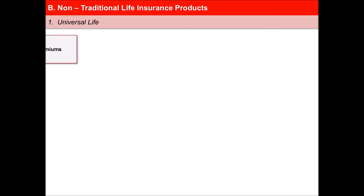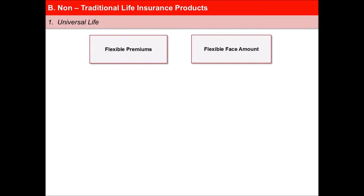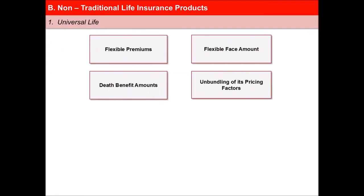Universal life insurance is a form of permanent life insurance characterized by flexible premiums, flexible face amount and death benefit amounts, and the unbundling of its pricing factors. Policyholder within limits can decide the amount of premiums, make additional premiums, or skip premium payments.